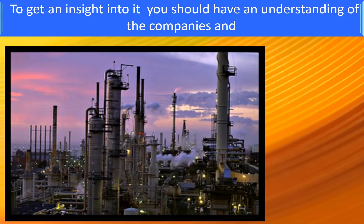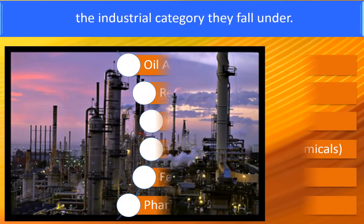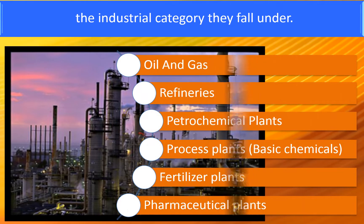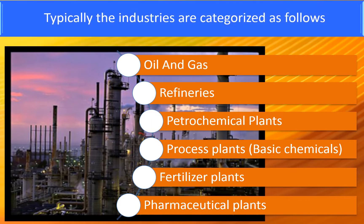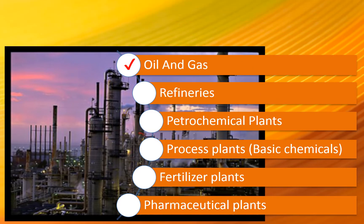To get an insight into these roles, you should have an understanding of the companies and the industrial categories they fall under. Typically, the industries are categorized as follows: oil and gas, refineries, petrochemical plants, process plants, basic chemicals, fertilizer plants, and pharmaceutical plants.